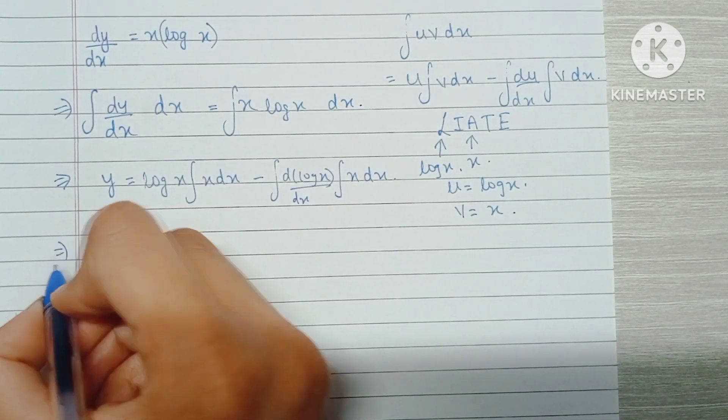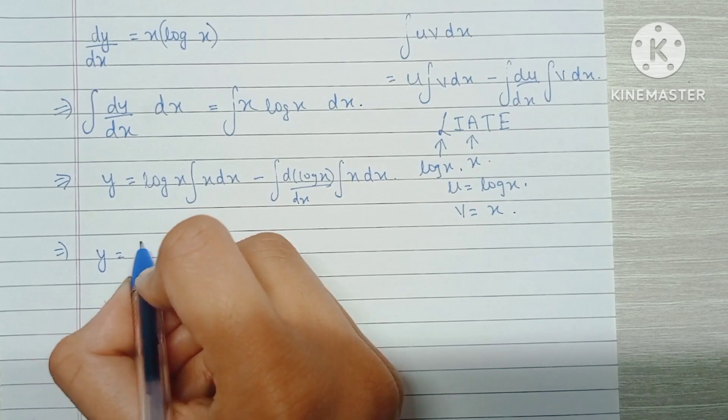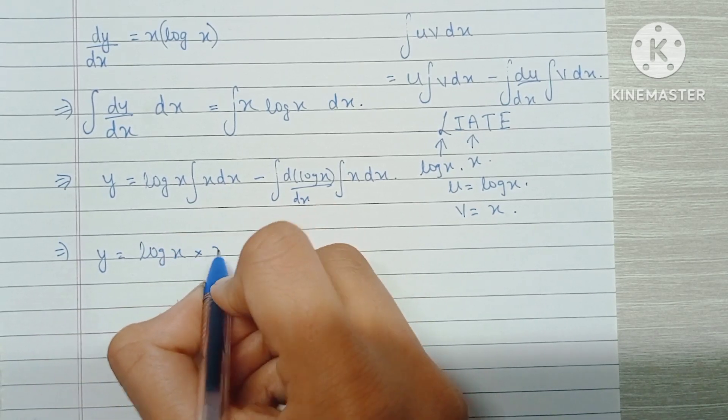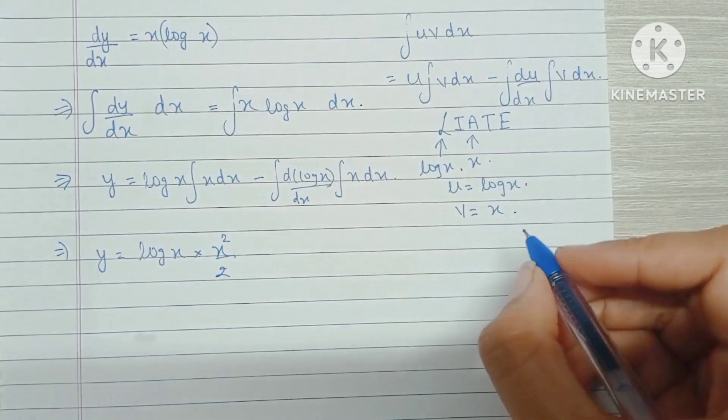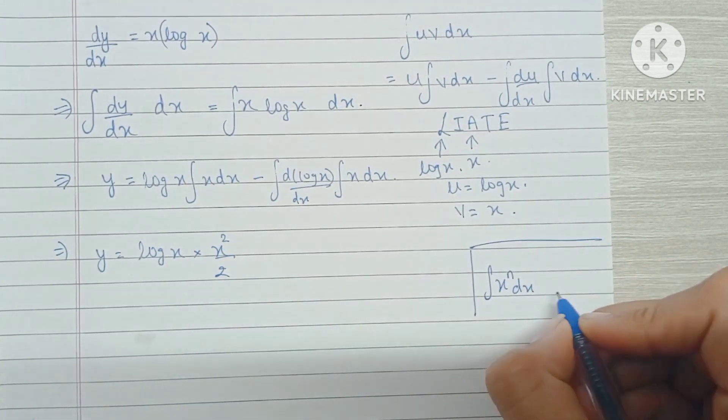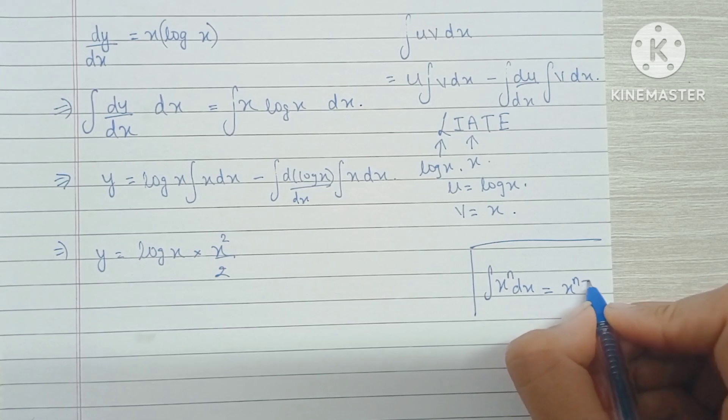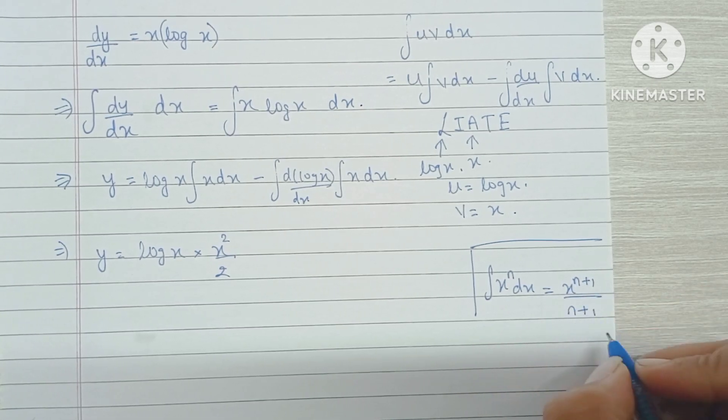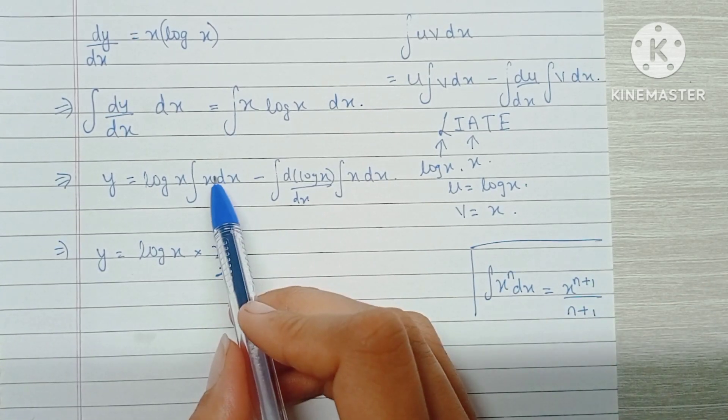This becomes y equals log x times x²/2 because the integration of x dx, where n is 1, gives x²/2.